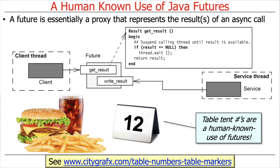A fun example that will make it easy to remember what a future is like are the concept of table tent numbers. Back in the day, if you went to certain kinds of restaurants and you ordered food, they would hand you a table tent number. Nowadays, they probably give you a receipt with a number on it. And this is basically a future that says, we don't give you your food right now, but we're giving you something that can be used to get your food later, or redeem or claim your food.